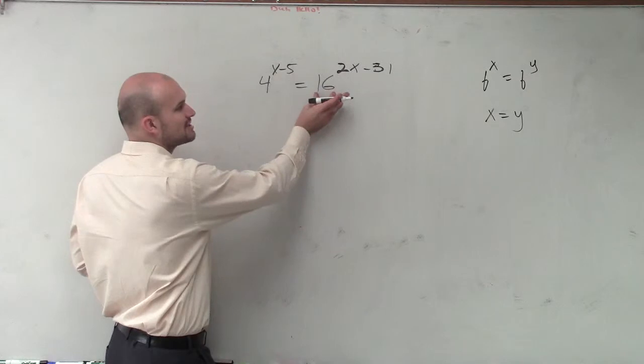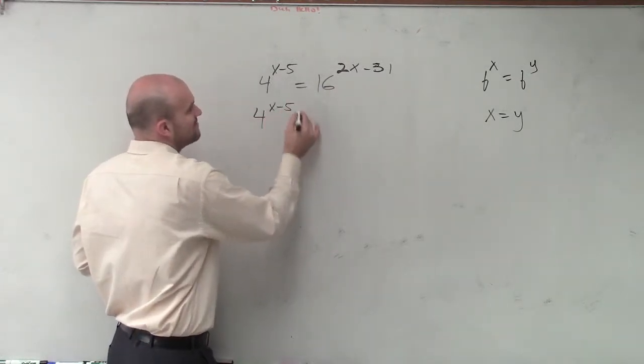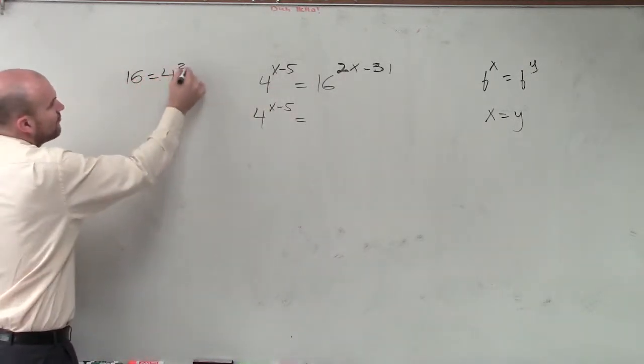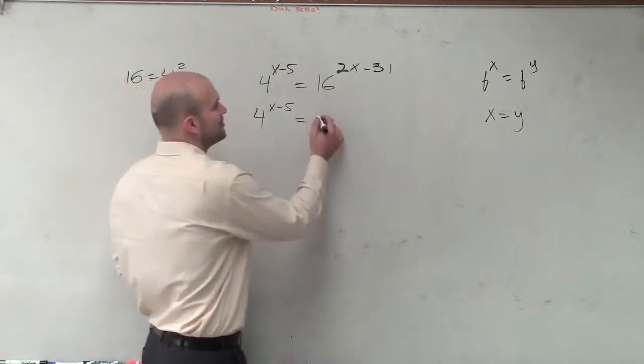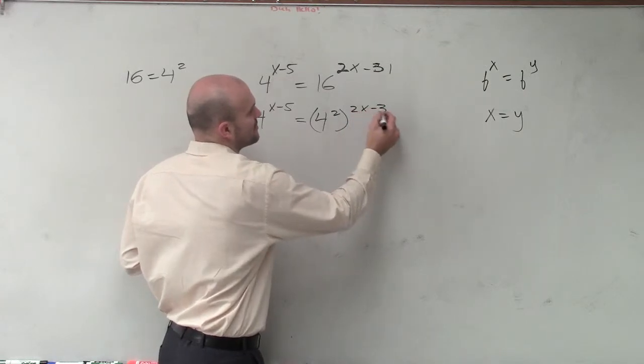So to do that, what I'm going to do is I'm going to rewrite my 16 as 4 to the x minus 5 equals, well, I can rewrite 16 is equal to 4 squared, right? And if I write it in that format, then I know I'm going to have a base 4 on both sides. So I write 4 squared times 2x minus 31.